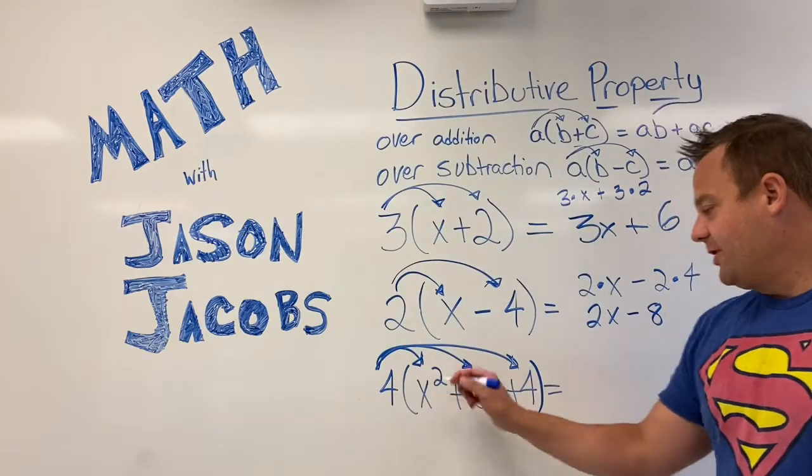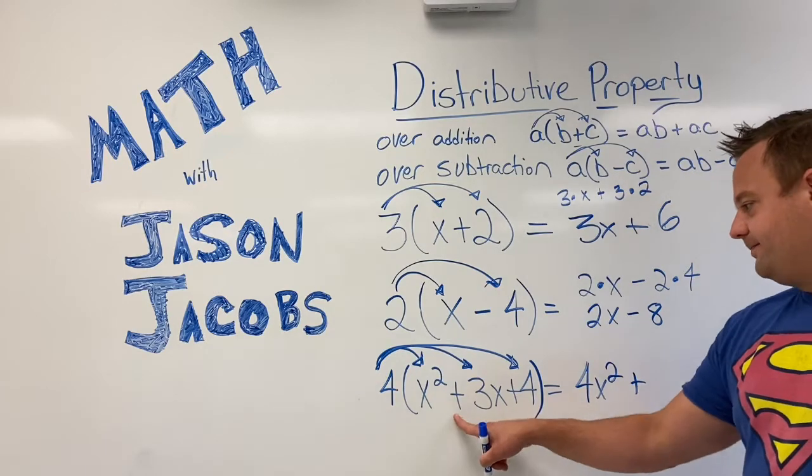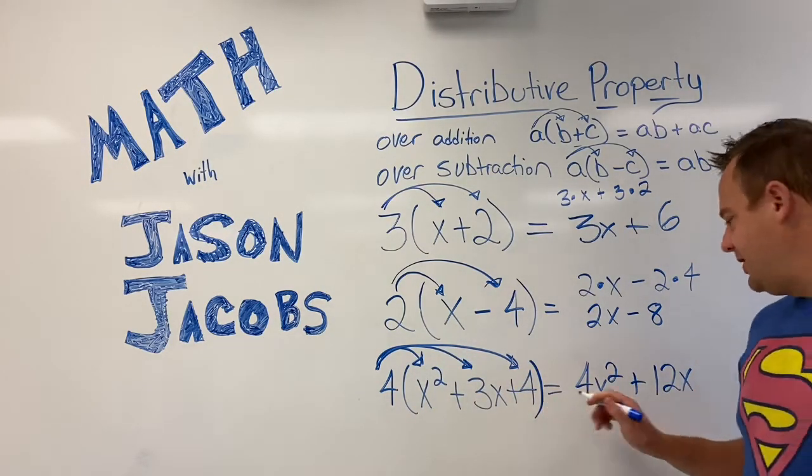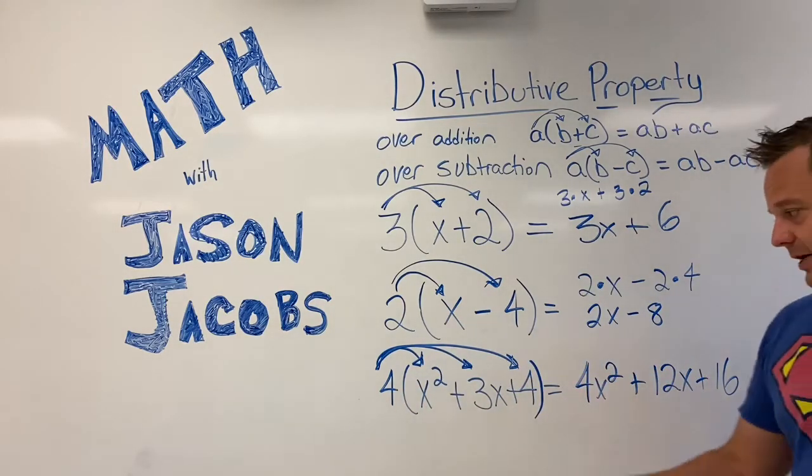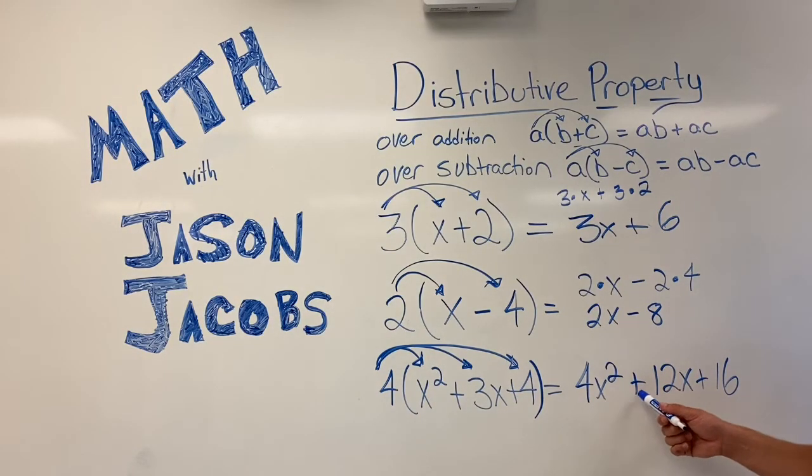Four times x squared is 4x² plus four times 3x is 12x plus four times four is 16. So notice how we distribute it out. And we get 4x² plus 12x plus 16. And we can't combine. This is a different term, that's a different term, that's a different term.